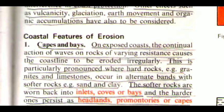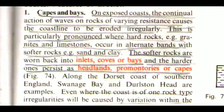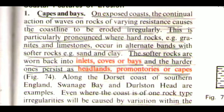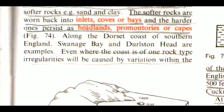Now the coastal features of erosion. The first one is caves and bays. On exposed coasts, the continual action of waves on rocks of varying resistance causes the coastline to be eroded irregularly. This is particularly pronounced where hard rocks, e.g. granites and limestones, occur in alternate bands with softer rocks, e.g. sand and clay. The softer rocks are worn back into inlets, coves or bays, and the harder ones persist as headlands, promontories or capes. Along the Dorset coast of southern England, Swanage Bay and Durlston Head are examples.